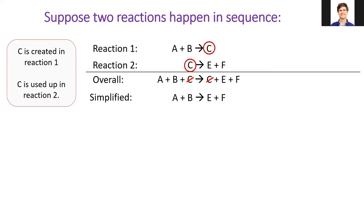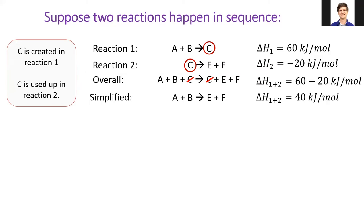Now, suppose we know the reaction enthalpies for reactions 1 and 2. If we add those two reaction enthalpies together, we get the overall reaction enthalpy. This is called Hess's Law.